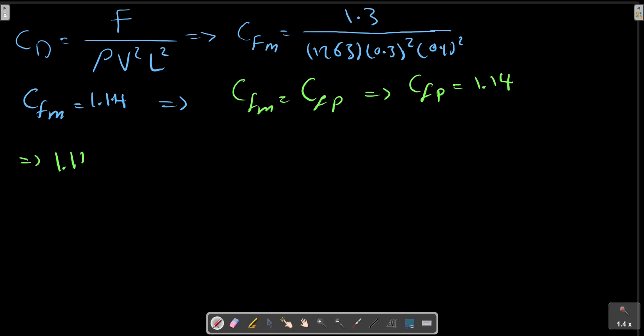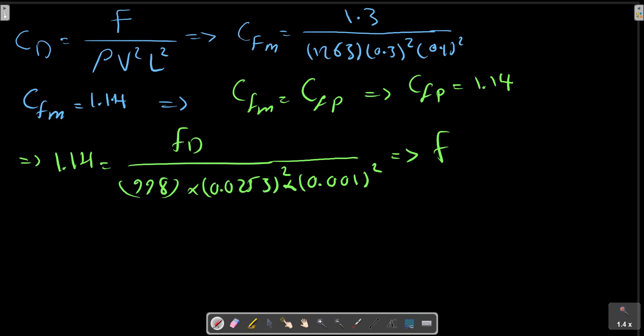We can make a relation for the prototype, Fd, rho which is for water, and the velocity computed before. Let's go to the diameters. Fd can be calculated and is in Newtons.